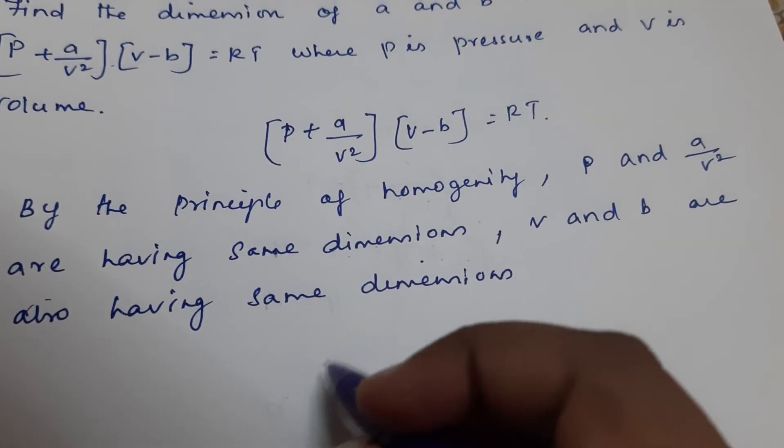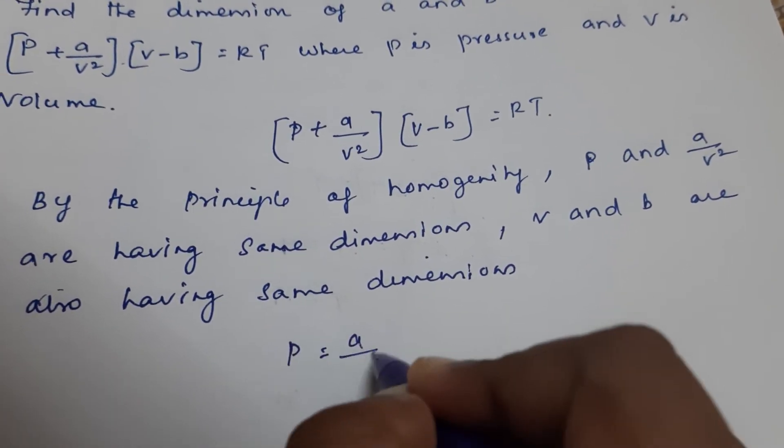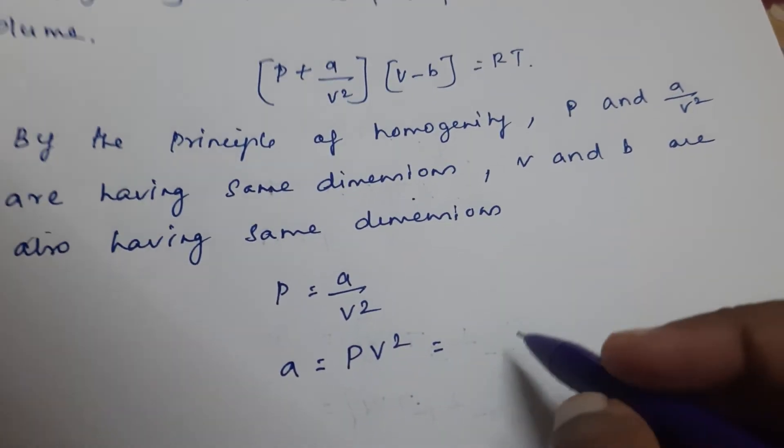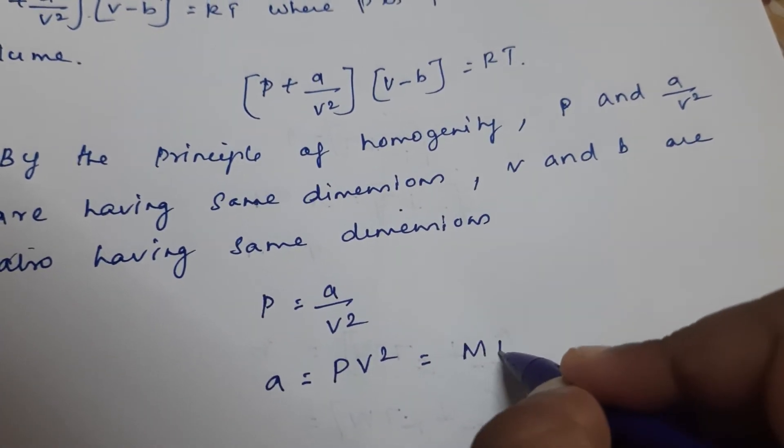So we can equate P with a/V². Therefore, a = P × V². What is the dimension for P? P is M L⁻¹ T⁻².